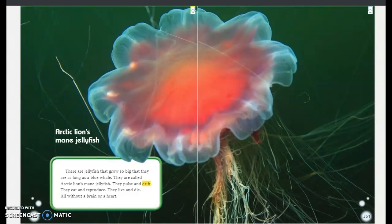This is an Arctic Lion's Mane jellyfish. There are jellyfish that grow so big that they are as long as a blue whale. They are called Arctic Lion's Mane jellyfish. They pulse and drift. They eat and reproduce. They live and die, all without a brain or a heart.